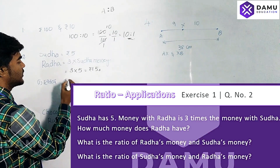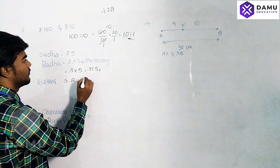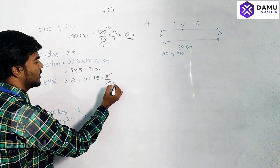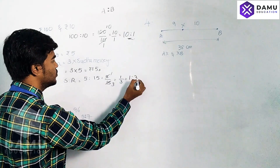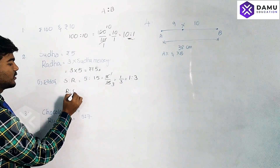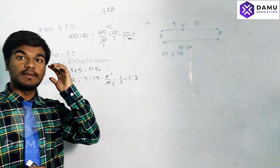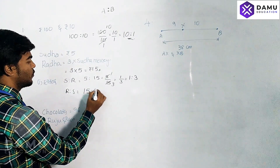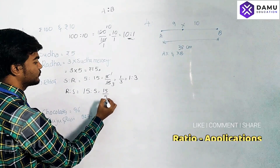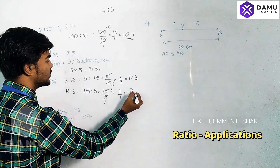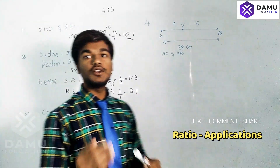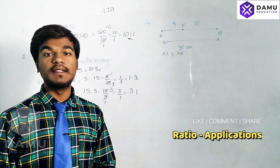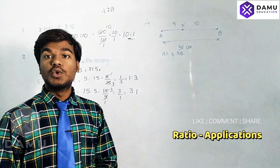Now let's find the ratios. Sudha to Radha's money is five is to fifteen, that is five by fifteen, which simplifies to one by three — so one is to three. Next, Radha to Sudha's money: Radha's money is fifteen, Sudha's is five, so fifteen by five is three by one — that is three is to one. In ratios, we write the numerator first, then the colon symbol, then the denominator value.